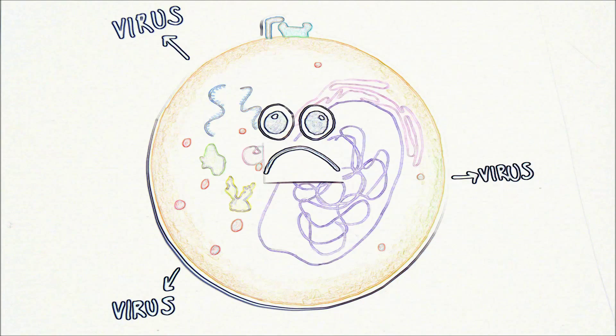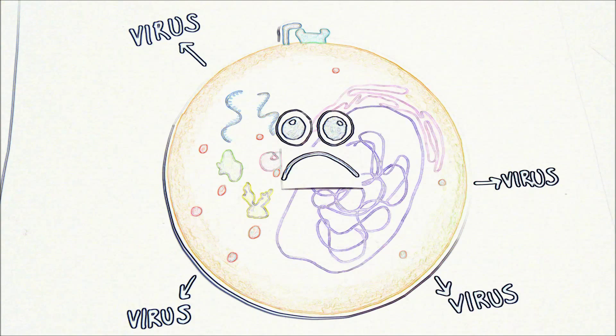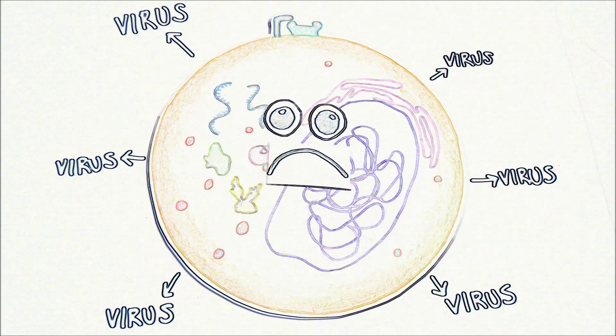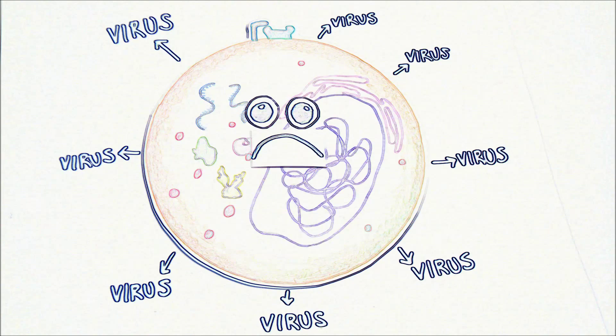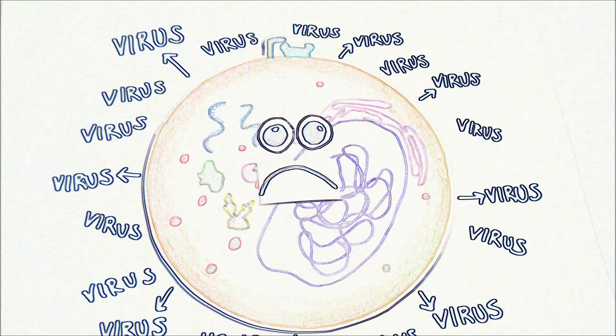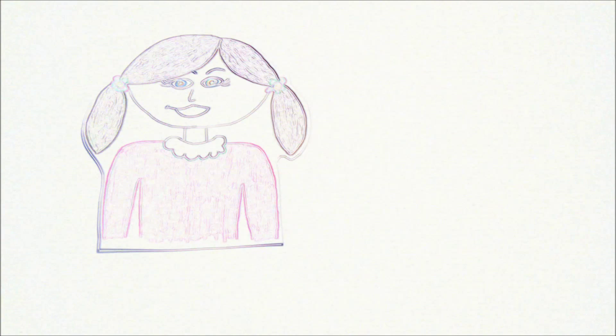The virus leaves the cell, matures, and infects other cells to the point where there are not enough helper T-cells to maintain a healthy immune system.